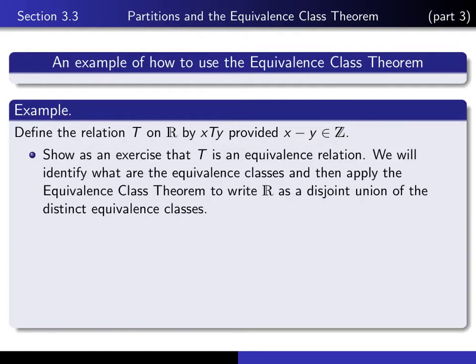It's an exercise for you to show that T is actually an equivalence relation. So what we're going to do here is see if we can identify what the equivalence classes are, and then use it to show that we can partition the entire set of real numbers into a disjoint union of equivalence classes.